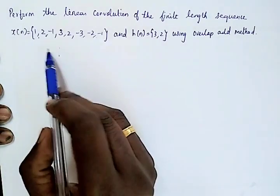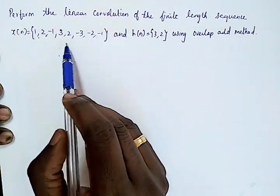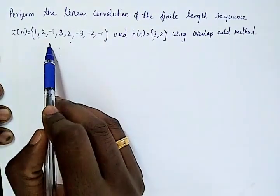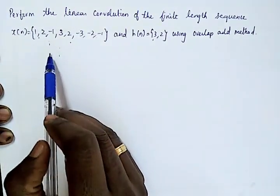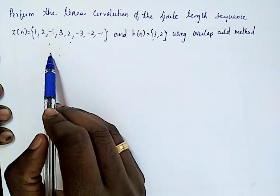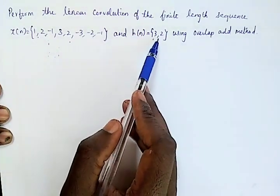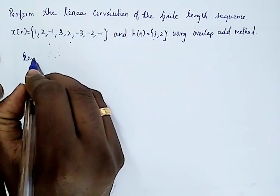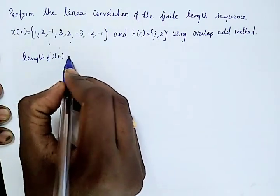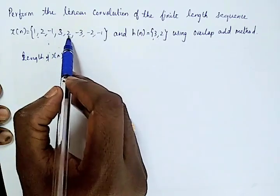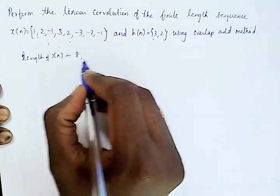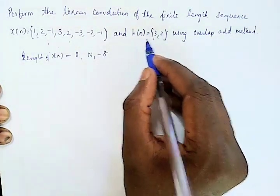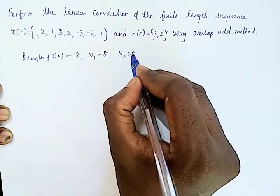Looking at the sequences, we have two different lengths. x[n] is the larger length sequence and h[n] is the smaller length sequence. The length of x[n], which we'll call N1, is 8. And the length of h[n], which we'll call N2, is 2.